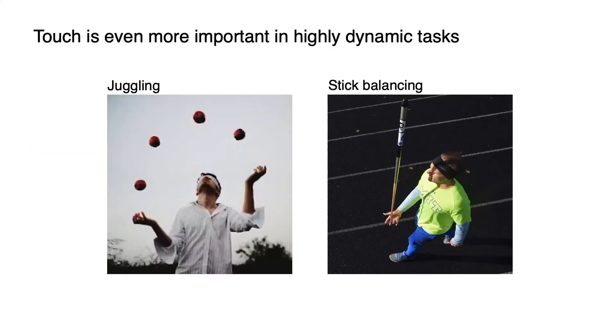When interacting with diverse objects using our hands, humans can feel and sense the contacts, understand the local contacting patterns, estimate the current state, and model the dynamics. The tactile sensing capability is even more important in highly dynamic tasks like juggling and stick balancing. Therefore, it is desirable to develop techniques that can model the dynamics of hand-object interactions from tactile sensing, especially in these highly dynamic tasks.